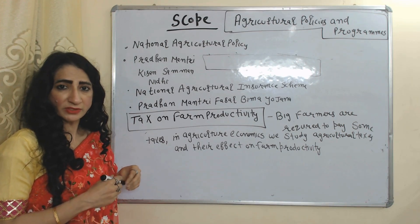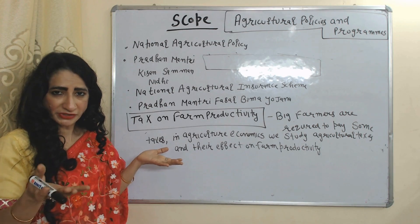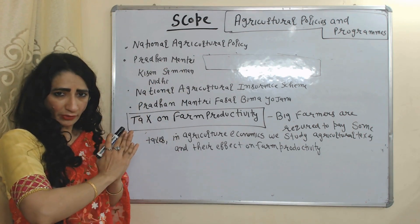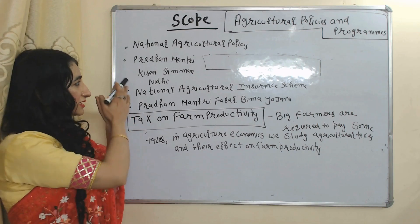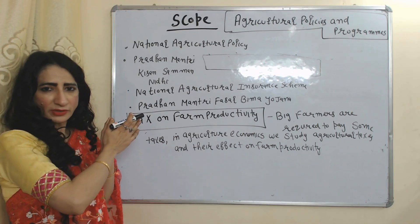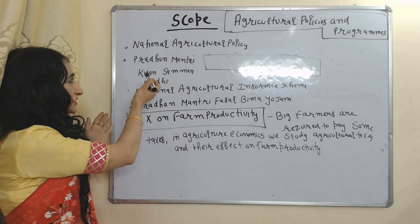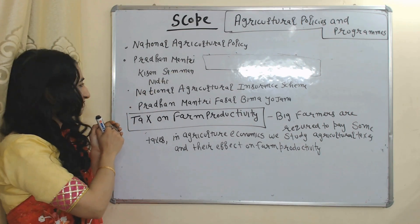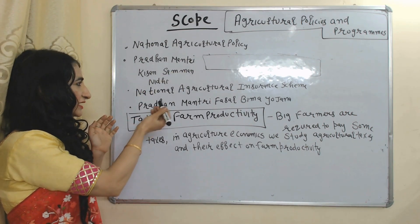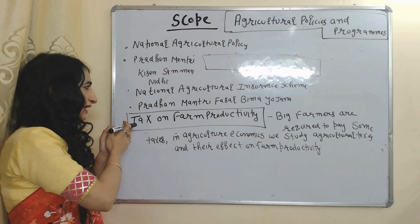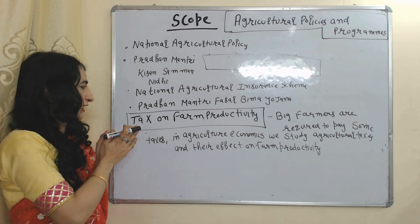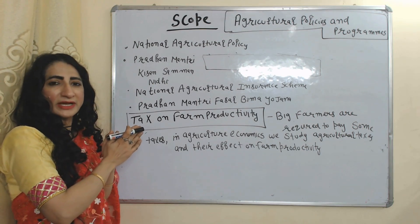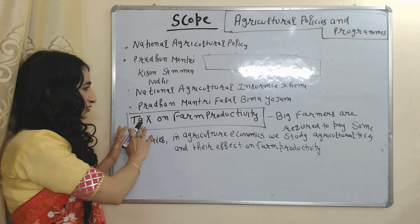Agricultural policies and programs: governments adopt many agricultural policies and programs in order to increase agricultural production. Agricultural economics studies all these policies and programs. Some examples in India include the National Agriculture Policy and the National Agriculture Insurance Scheme.